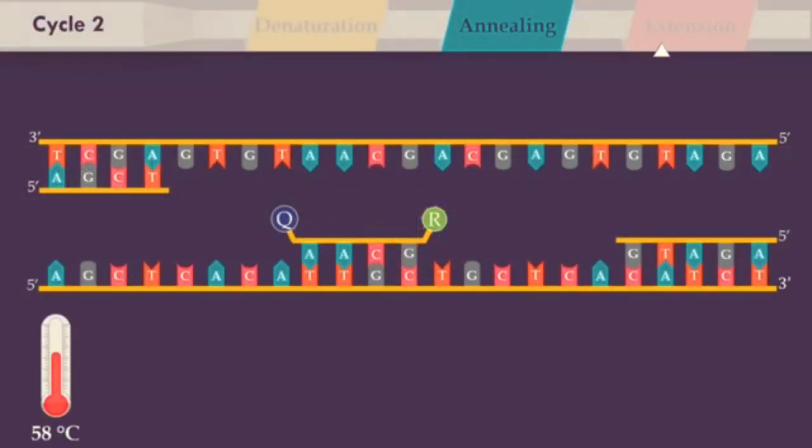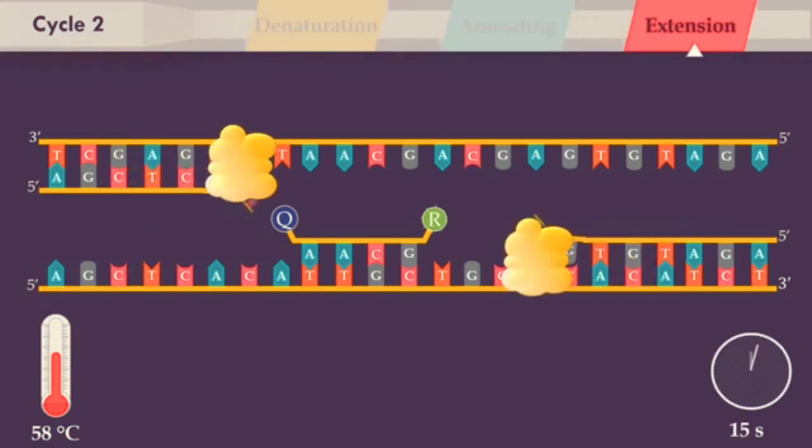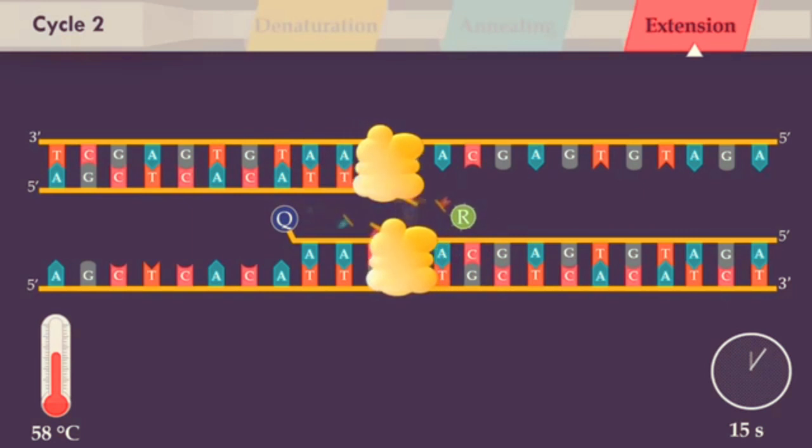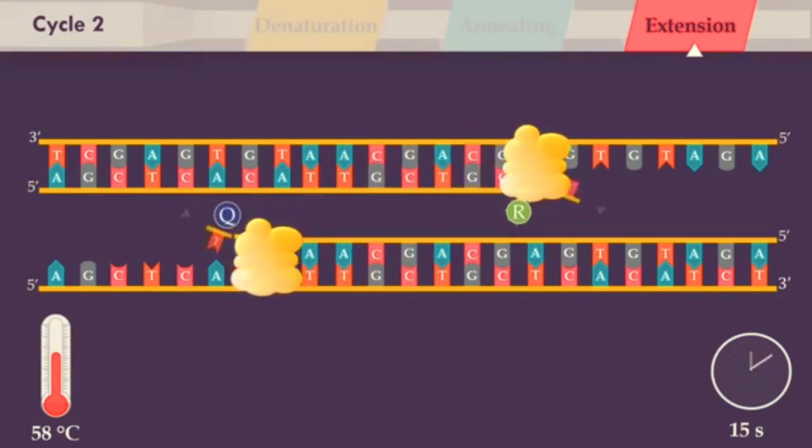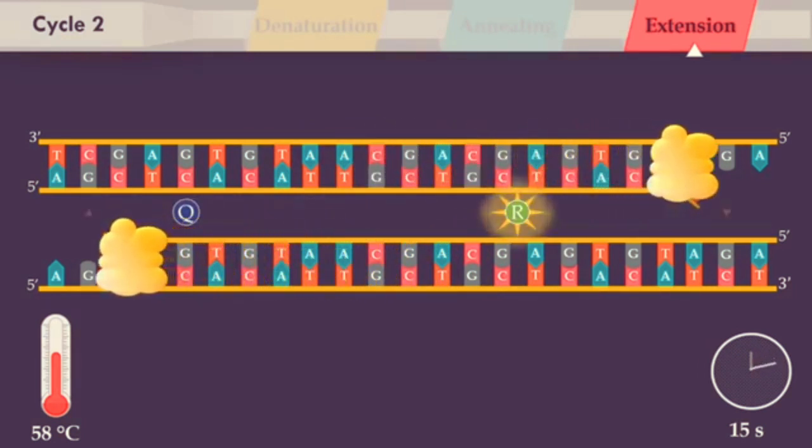In the extension step, DNA polymerase synthesizes new strands. When the polymerase reaches a Taqman probe, its endogenous 5' nuclease activity cleaves the probe, separating the dye from the quencher.